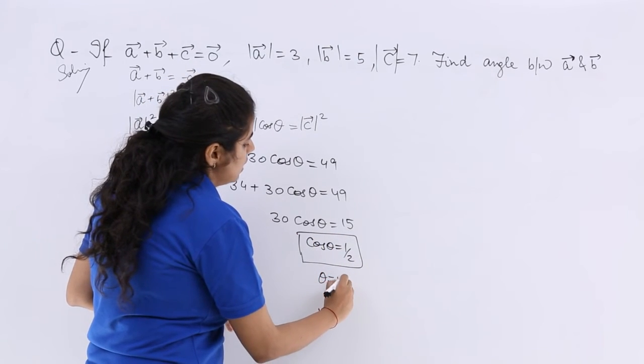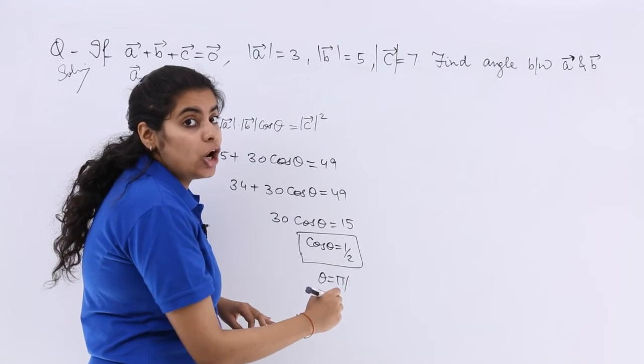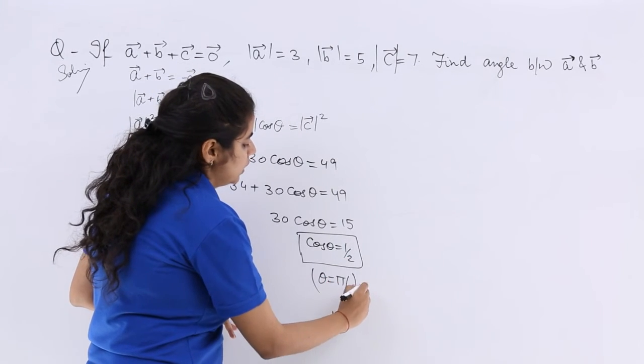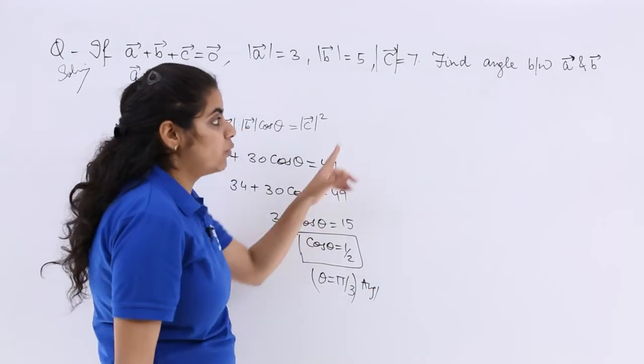Now what is theta? Simply cos 60 is 1 by 2, so pi by 3, and that is the answer because we wanted to find the angle between A and B.